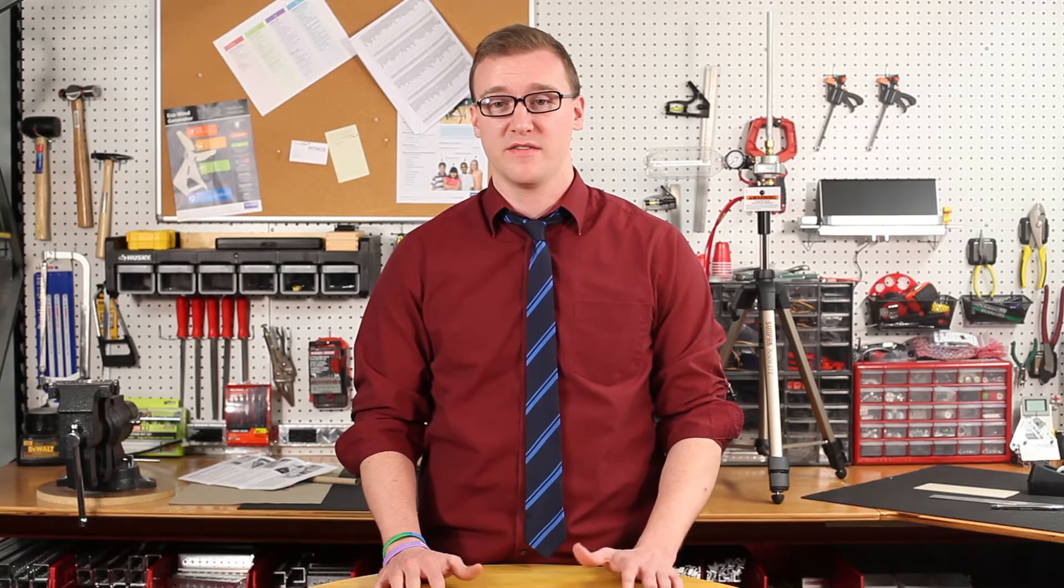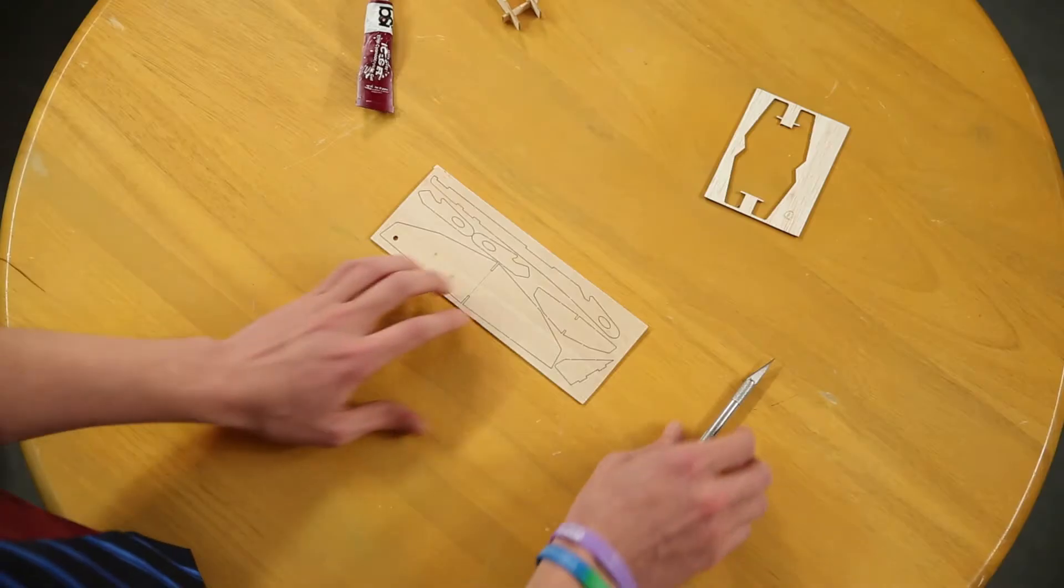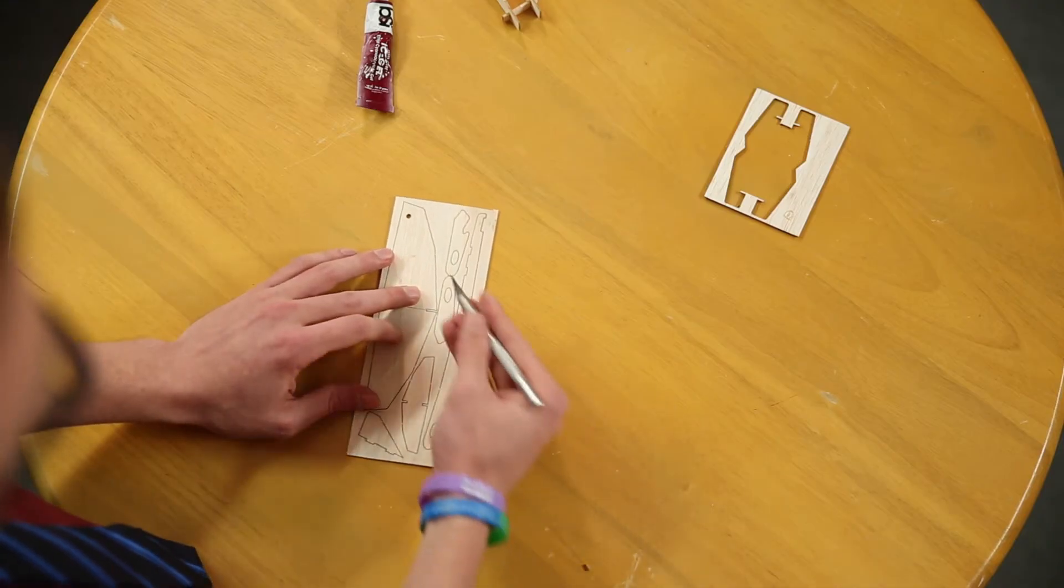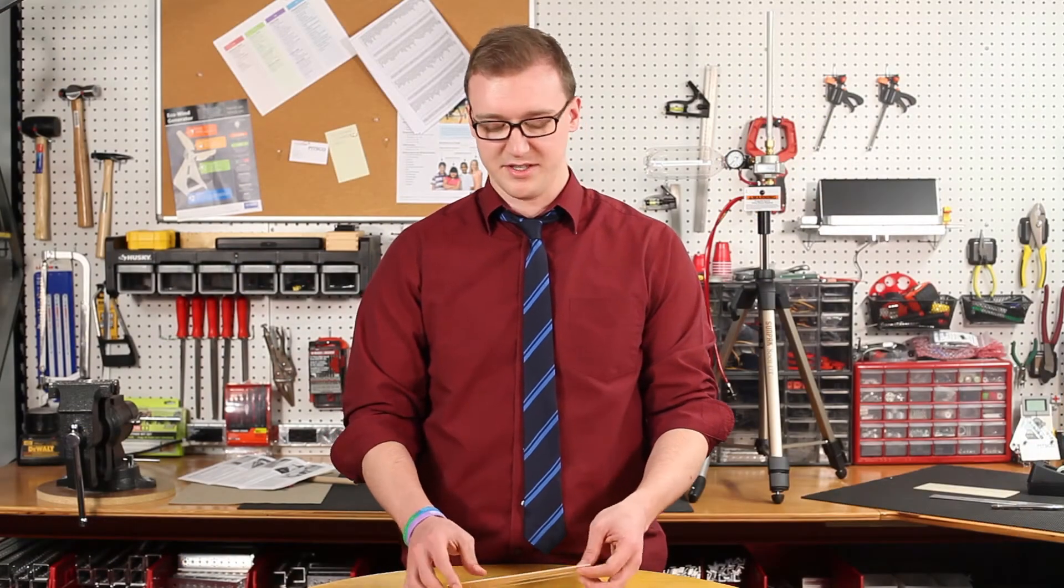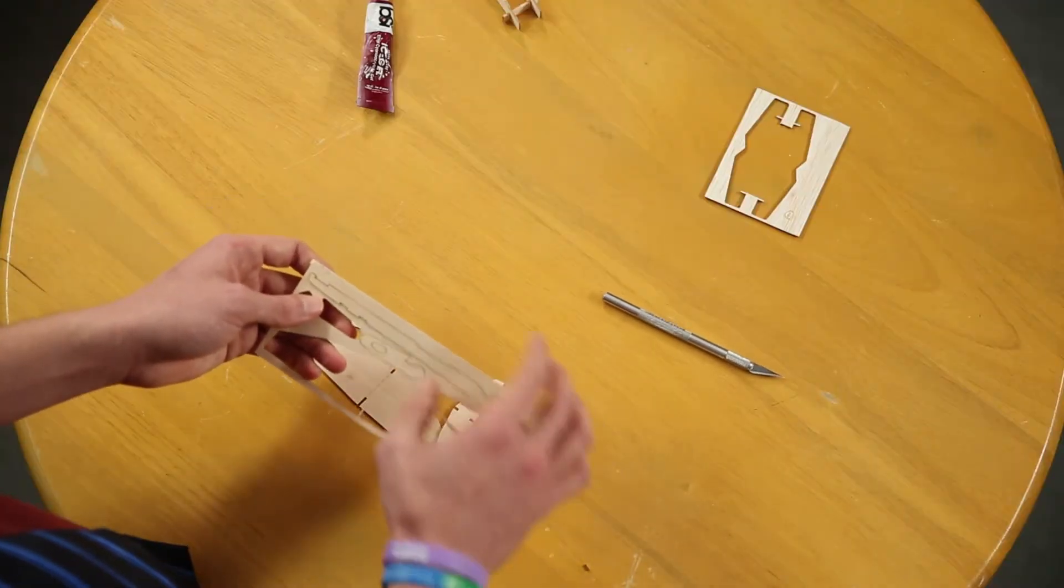Now we're going to start assembling the gliders. So select one of the three different glider shapes and then just start with the hobby knife cutting where the contact parts are. After cutting all the pieces, you can just pop them straight out of the balsa wood.